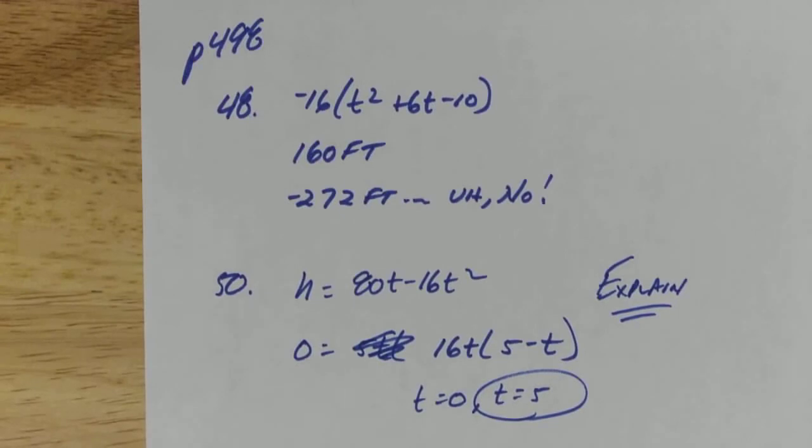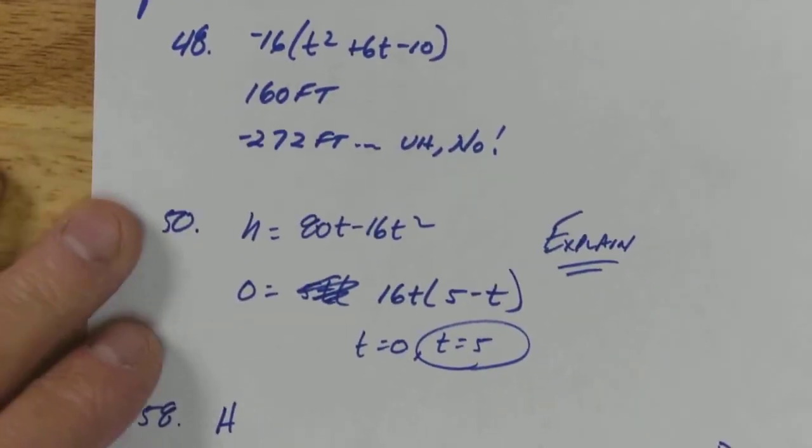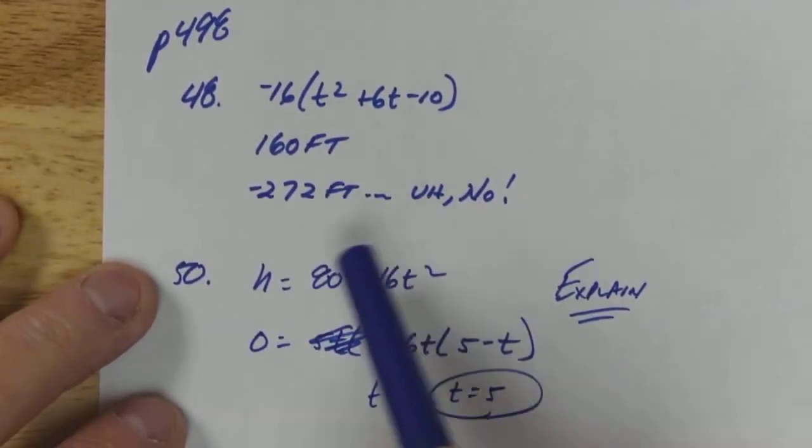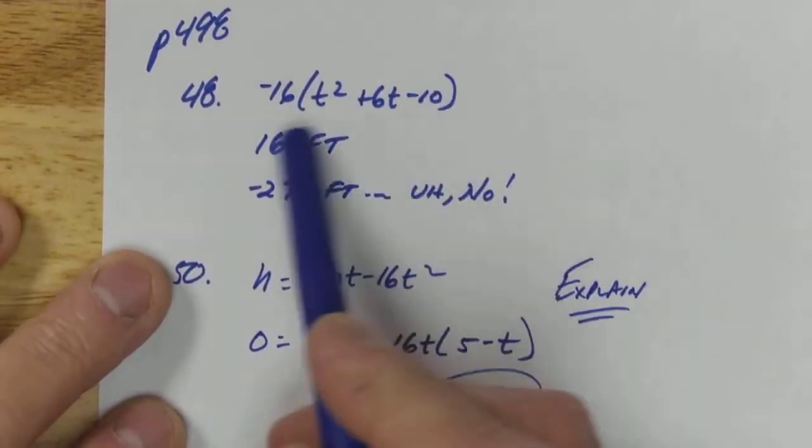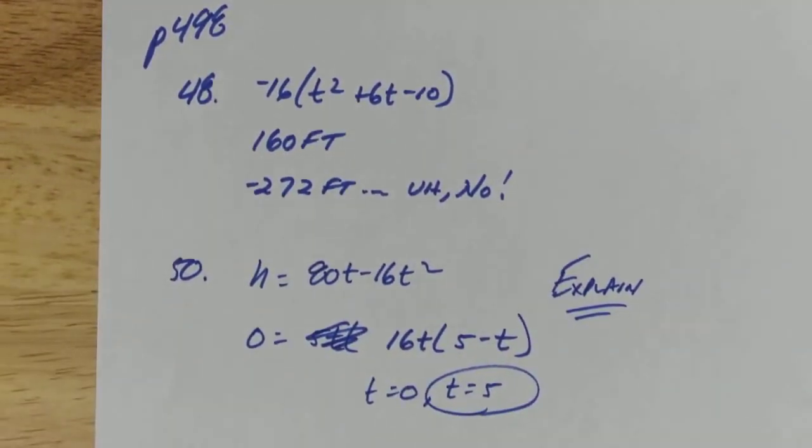Okay, 48: I went ahead and took out a negative 16 and you get negative 272 feet, so that would be into the ground. Not going to work. 50 had a question on 50.